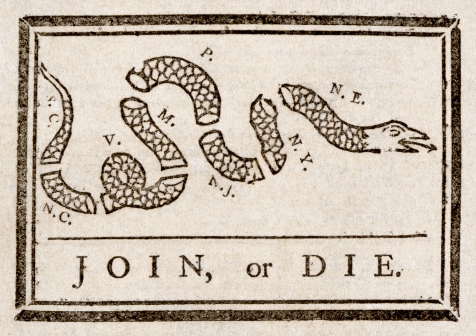By 1776, about 85% of the white population's ancestry originated in the British Isles, 9% of German origin, 4% Dutch, and 2% Huguenot French and other minorities. Over 90% were farmers, with several small cities that were also seaports linking the colonial economy to the larger British Empire. These populations continued to grow at a rapid rate during the late 18th and early 19th centuries, primarily because of high birth rates and relatively low death rates.